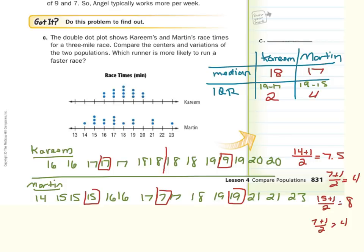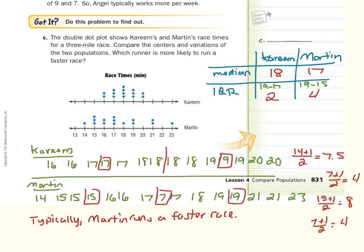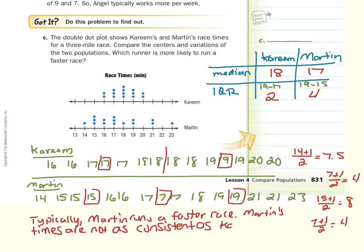To draw our conclusions: Martin's median is 17 compared to 18 for Karim, so typically Martin runs a faster race. But his IQR of 4 means he's really inconsistent — he has a lot of variation. So we need to note that Martin's times are not as consistent as Karim's. And that is it for this lesson on comparing populations. Good luck!